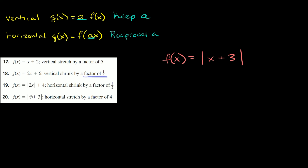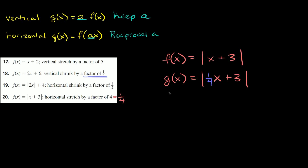Number 20: f of x equals the absolute value of x plus three. Horizontal stretch by a factor of four. The reciprocal of four is one-fourth. We only multiply the x's by one-fourth. So g of x equals the absolute value of one-fourth x plus three.